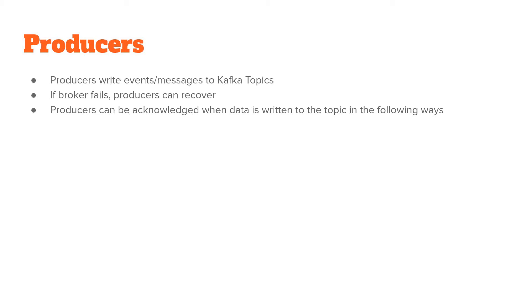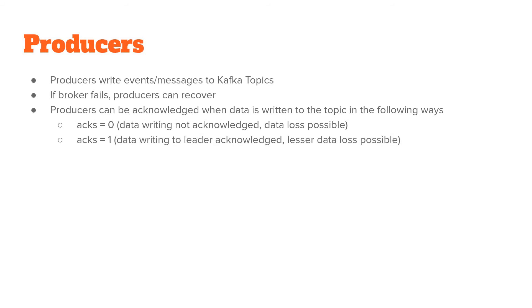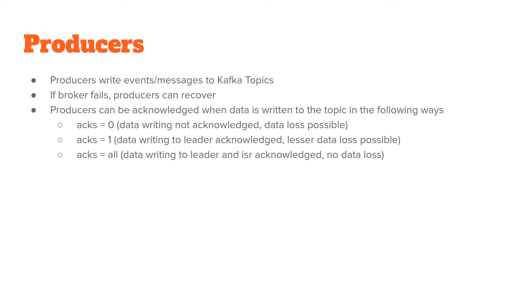When producers write data to a Kafka topic, they can choose to be acknowledged in one of the following ways: acks=0, acks=1, or acks=all. With acks=0, the producer chooses not to be acknowledged about the data being successfully written. With acks=1, the producer is acknowledged when data is successfully written into the leader broker. With acks=all, the producer is acknowledged when data is written both in the leader as well as in the in-sync replicas. Data loss is possible with acks=0, reduced with acks=1, and there is no data loss with acks=all.